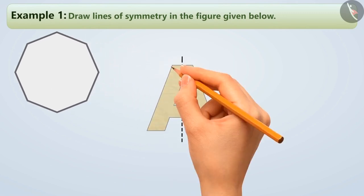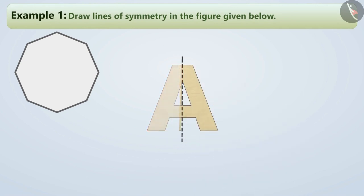In the previous video, we learned that a line is called a line of symmetry if it divides the figure into two equal halves such that when folded through that line, the figure covers the other half completely.